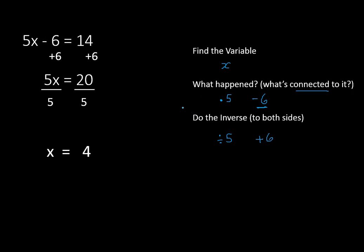So each time we do an equation with two steps, we're going to follow this same pattern. We're going to look for what's happening and what's connected to it, and then we're going to do the order of operations backwards. So first we did the subtraction, then the addition, or the subtraction and addition, then the multiplication division.